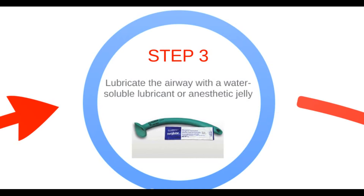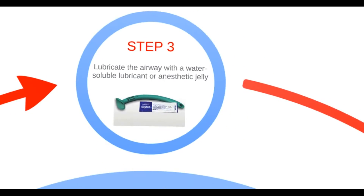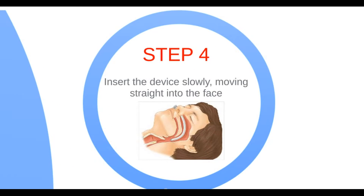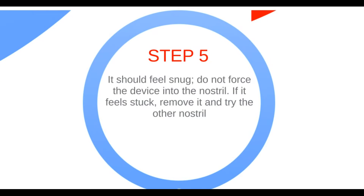Step 3 is to lubricate the airway with a water-soluble lubricant or anesthetic jelly. Step 4: insert the device slowly, moving straight into the face, not towards the brain. Step 5: ensure that the device is snug without being forced or stuck. If it feels stuck, remove it and try the other nostril or a smaller NPA.